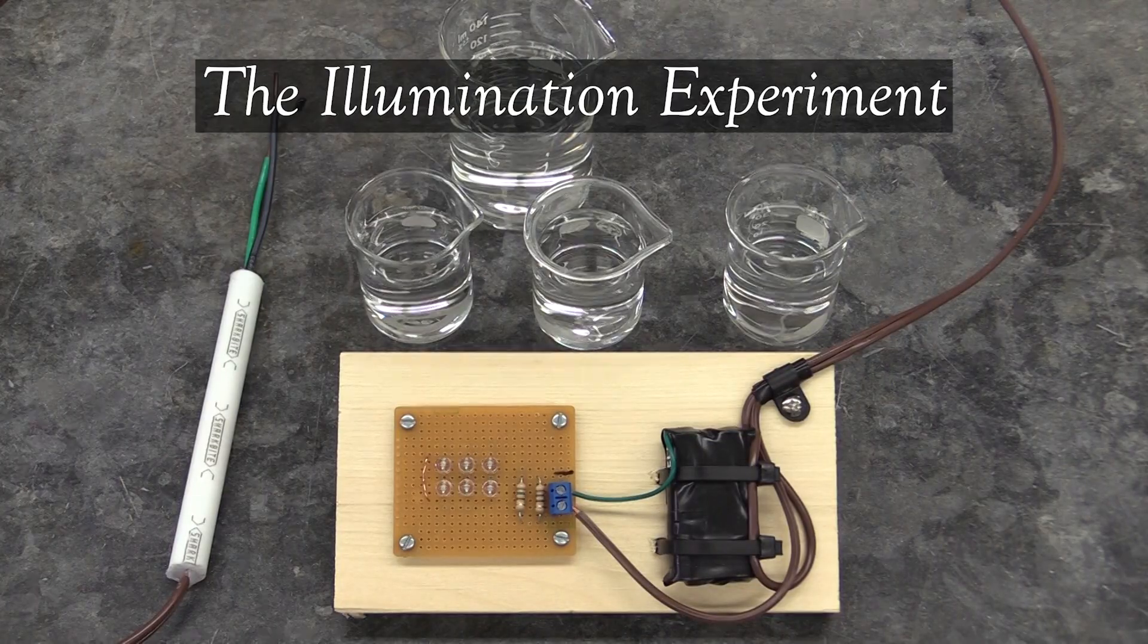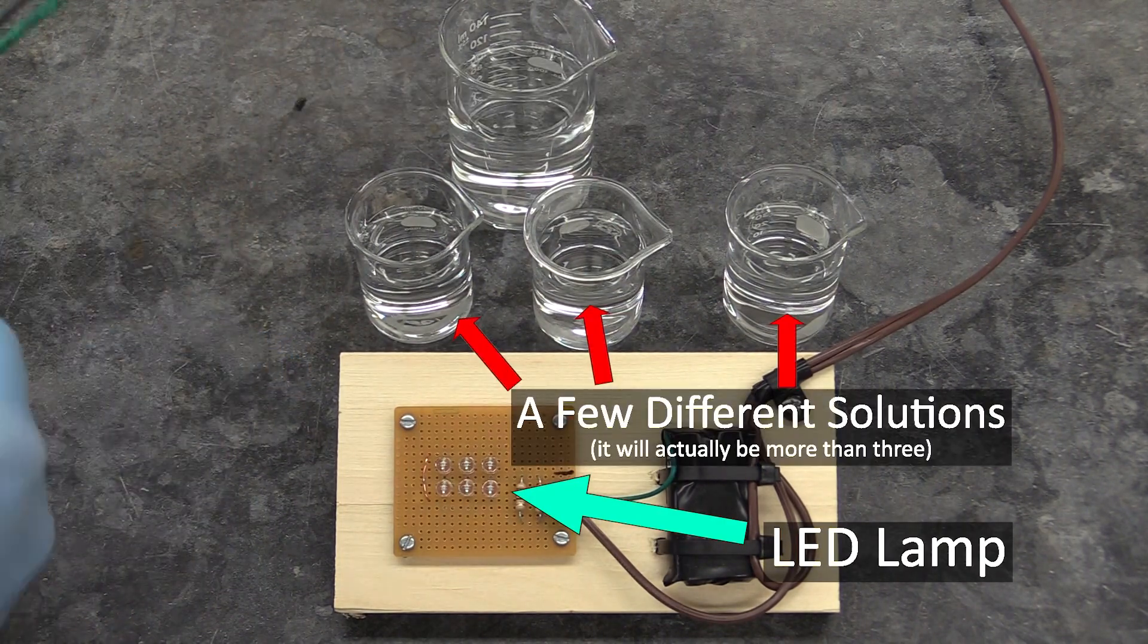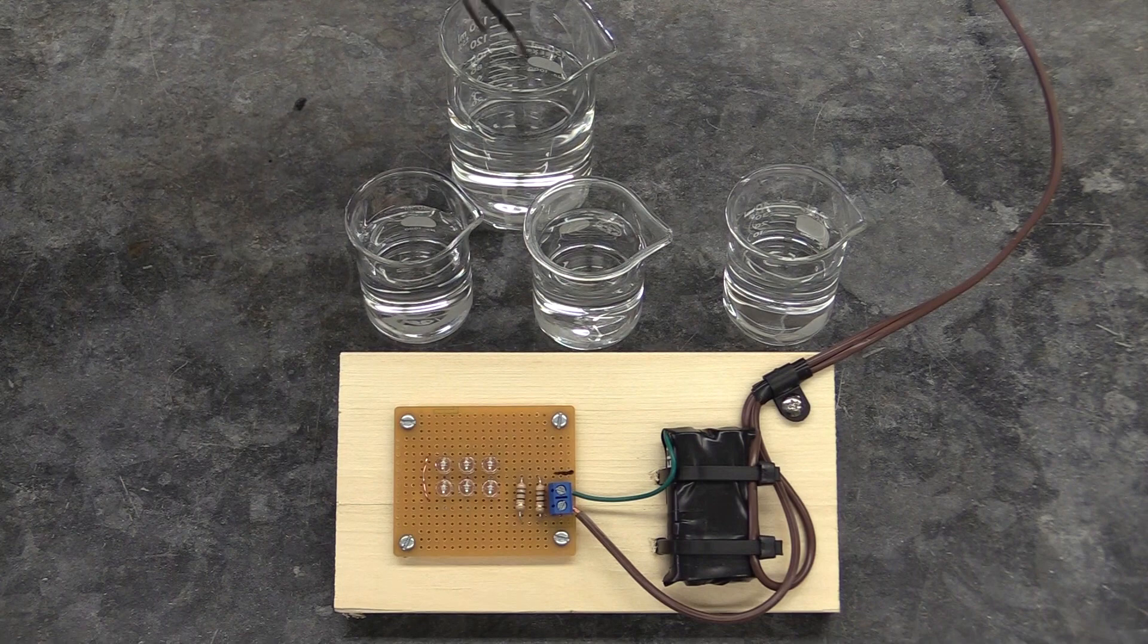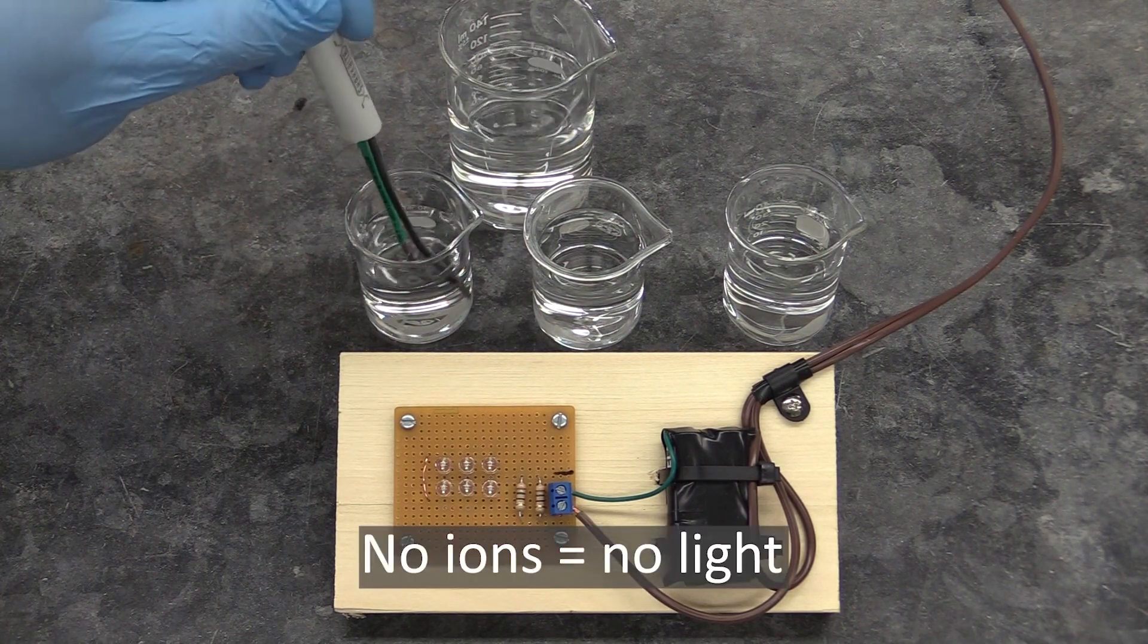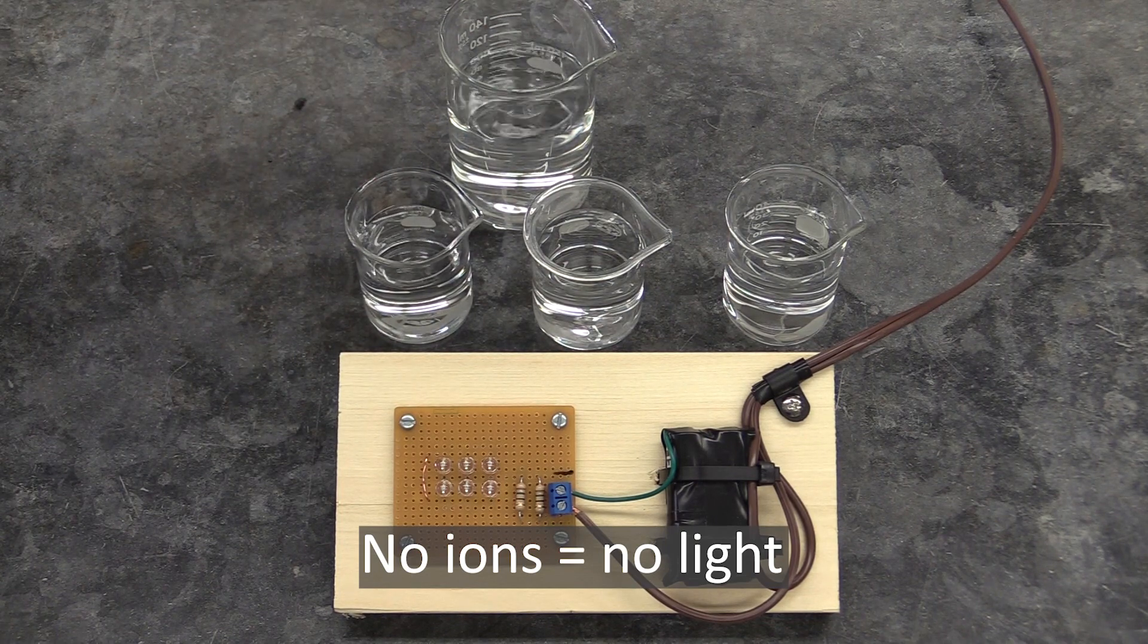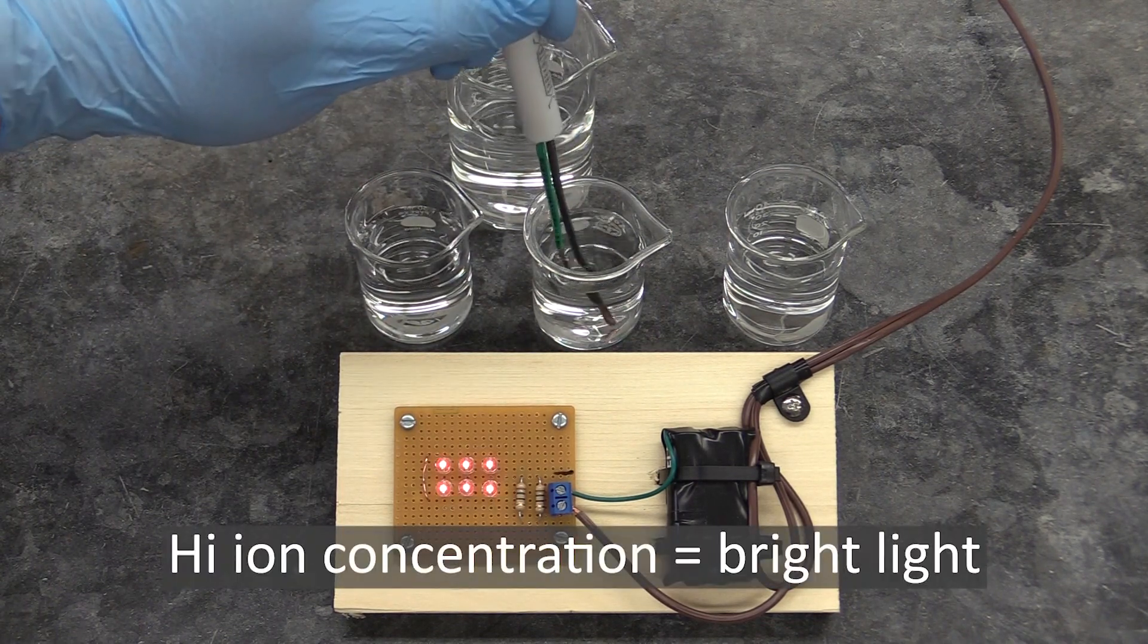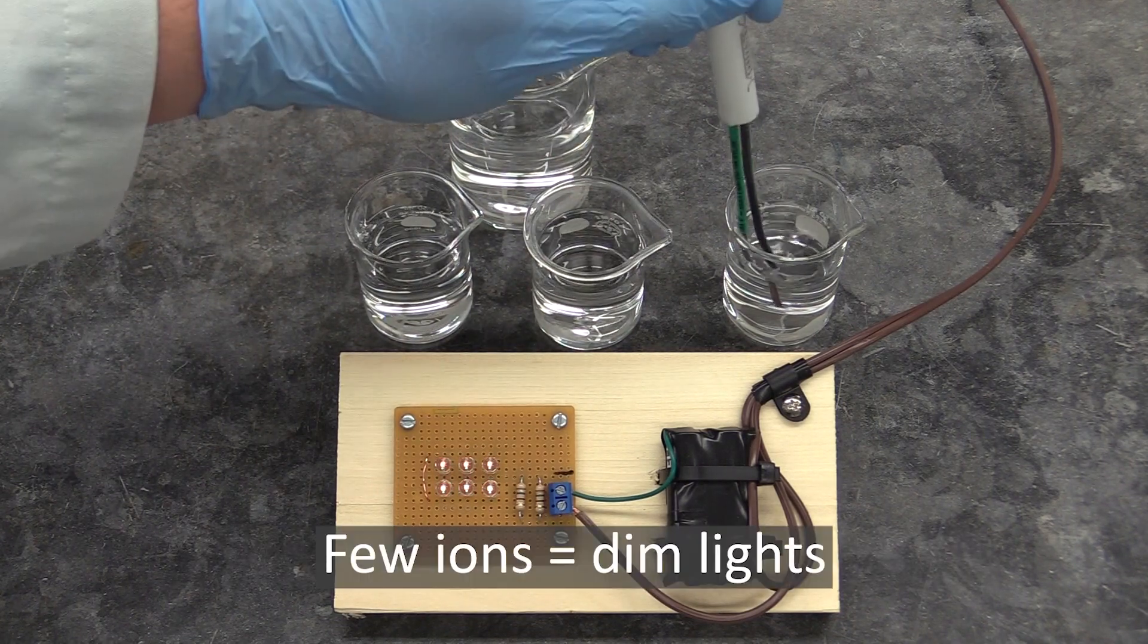In the illumination experiment, you will use an LED lamp to test a few different solutions for their ionic strength. If the solution you're testing has no ions dissolved in it, it won't be able to conduct electricity and the LEDs won't light. If the solution has a lot of ions, it will conduct electricity and the lamp will light up brightly. And if it has a few ions, the LEDs will light, but they'll be dim.